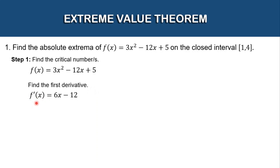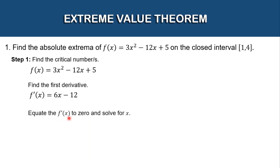We have f′(x), the first derivative. For the first term, multiply the exponent by the numerical coefficient: 2 times 3 is 6, then subtract 1 from the exponent — 2 minus 1 is 1. For the second term, the derivative of 12x is 12. The third term is a constant, so its derivative is 0. This is the first derivative of our given function. To continue finding the critical number, we need to equate the first derivative to 0.